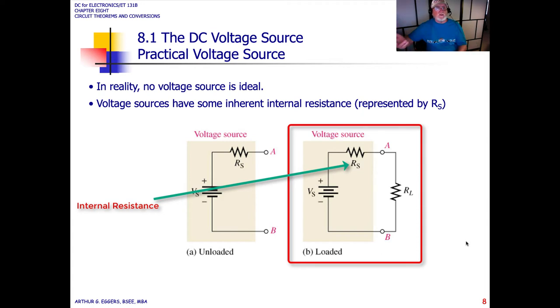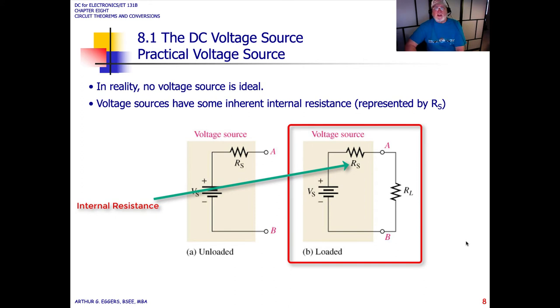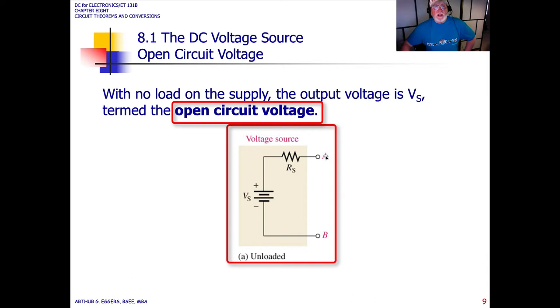When we look at these circuits and we want to determine what the internal resistance looks like versus a loaded and unloaded circuit, then it becomes important. In this case, you can see it really is just another series resistor. With no load on the supply, the output voltage of V sub S is termed the open circuit voltage.